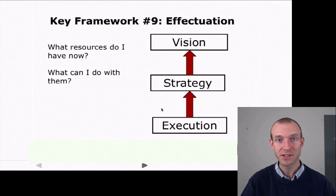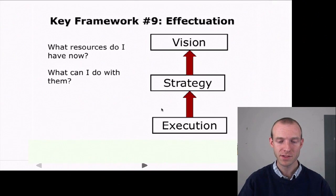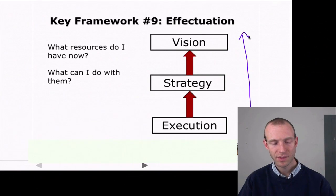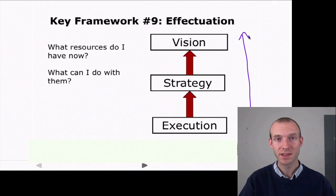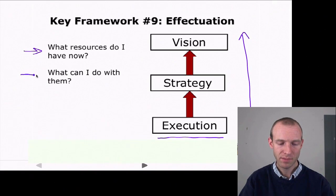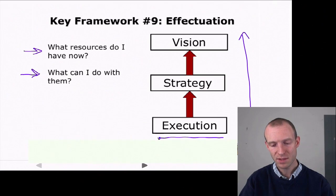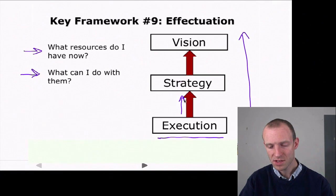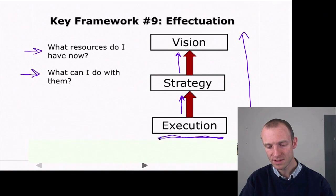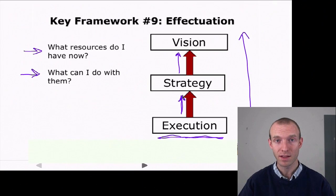Framework nine is known as effectuation, created by Saras Sarasvati at the University of Virginia. Notice that this model essentially reverses our model that we started with. In this model, you don't start with the vision. Similar to Steve Blank's ideas of customer development, you start by doing some things — thinking about what resources you currently have and what you can potentially do with them, and you begin to execute. You see what works and what doesn't, and from those initial experiments you develop your strategy. From your strategy, you begin to realize what your broader vision for the company is. Rather than starting with a fully-fledged vision, you can start by running a few experiments, see what's getting traction in the market, and then develop a broader strategy.